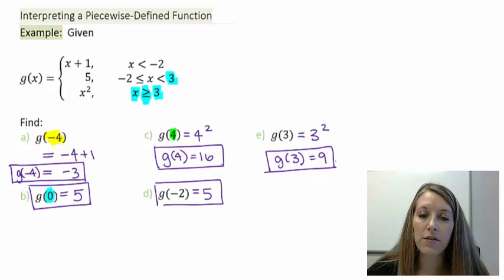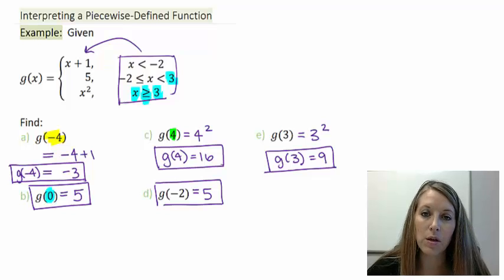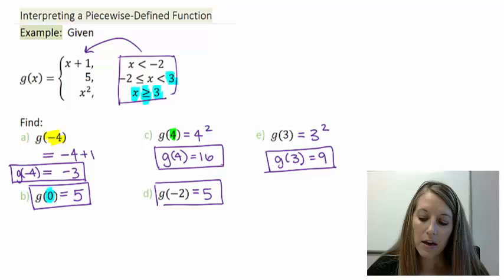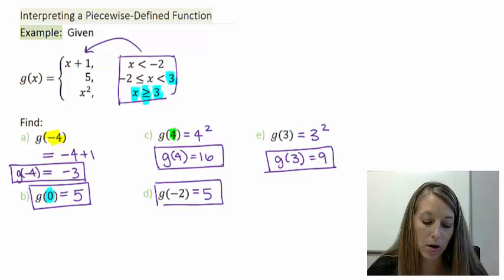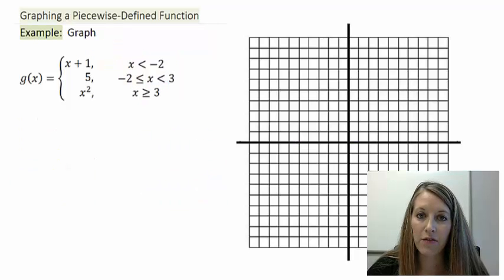Hopefully you're feeling more comfortable knowing which piece to plug into. It all comes down to which interval the value fits into first, and then you substitute it into the corresponding piece. Remember, you plug it into one and only ever one piece. Now that we've evaluated it, let's go ahead and graph it. I can start by plotting those points, or graph it by hand first and then double-check the points after.